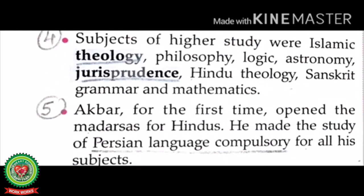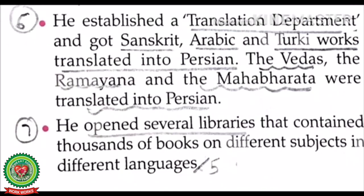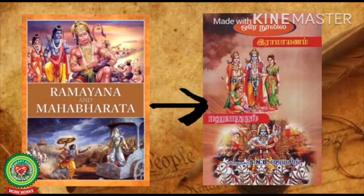Subjects of higher studies were: Islamic theology, philosophy, logic, astronomy, jurisprudence, Hindu theology, Sanskrit grammar, and mathematics. Number five: Akbar for the first time opened the madrasa for Hindus and made the study of the Persian language compulsory for all his subjects. Number six: he established a translation department and got Sanskrit, Arabic, and Turkish works translated into Persian — the Vedas, the Ramayana, and the Mahabharata were translated into Persian.